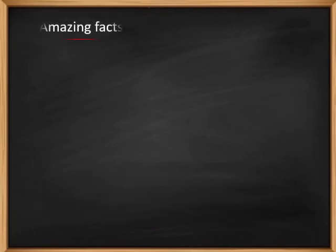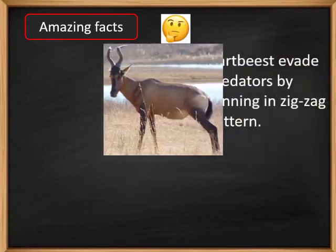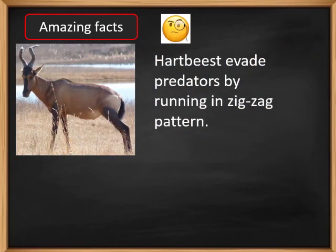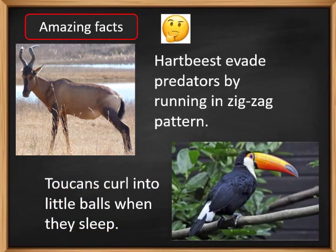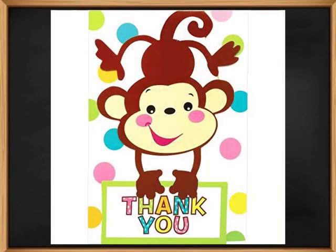Today's amazing facts. The heartbeast is the animal which evades its predators by running in a zigzag pattern. Tokens are birds which curl themselves into little balls when they sleep. See you next time with some more interesting facts. Till then, bye-bye. Thank you.